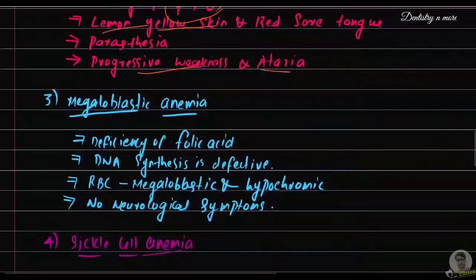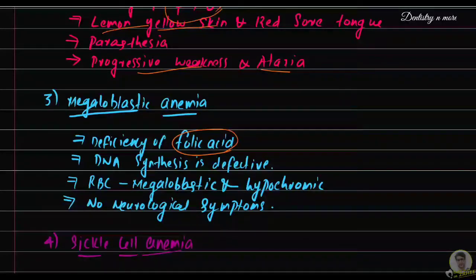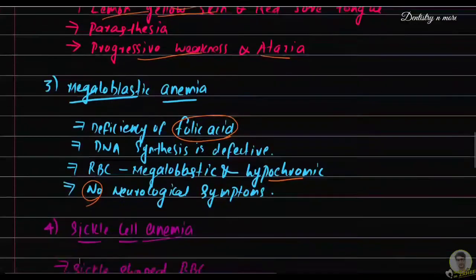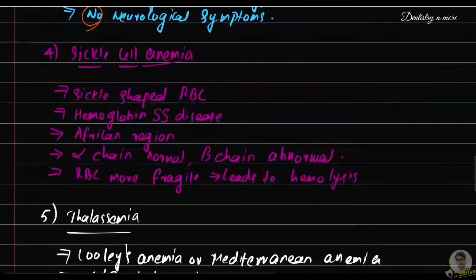Megaloblastic anemia is due to deficiency of another maturation factor — folic acid. The RBCs are not matured; DNA synthesis is also defective, so the nucleus remains immature and RBCs will be megaloblastic and hypochromic. Features of pernicious anemia also appear in this case, but there will be no neurological symptoms, as neurological symptoms are present only with pernicious anemia.